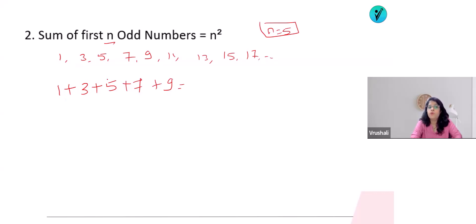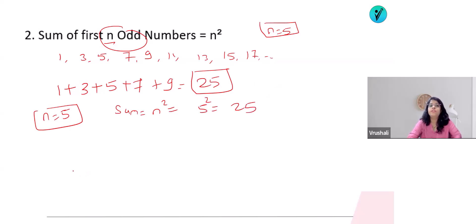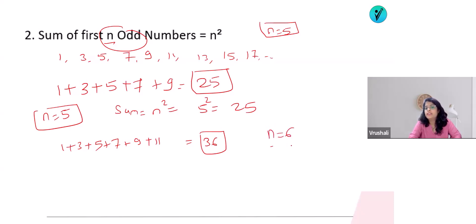Adding those: 1+3=4, 4+5=9, 9+7=16, 16+9=25. Instead of that, if I know n=5 and those are the first n odd numbers, then the sum equals n². That means 5² = 25. For first 6 odd numbers: 25 + 11 = 36, and n=6 gives n² = 36. The formula holds.